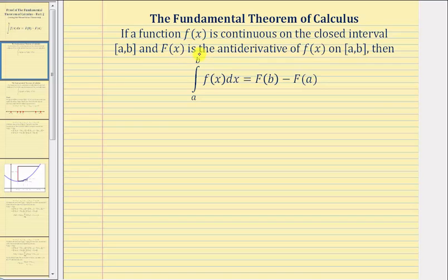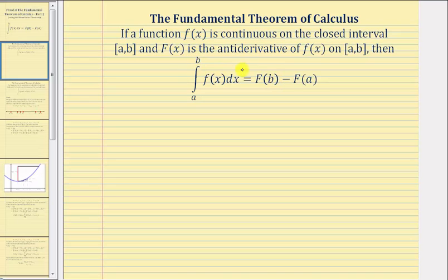and big F of x is the antiderivative of f of x on the closed interval, then the definite integral of f of x with respect to x from a to b equals big F of b minus big F of a. So this tells us we can determine the value of this definite integral by first determining the antiderivative big F of x, then evaluating it at the upper limit of integration b, then at the lower limit of integration a, then determining the difference.